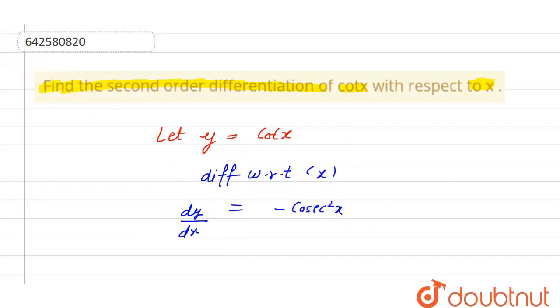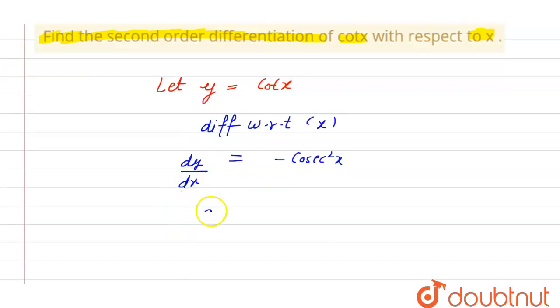we can differentiate it again with respect to x. So, differentiation again with respect to x. We have to use the formula of x^n to solve cosec²x. x^n says n shifts to coefficient and power decreases by 1. So, now we can apply this formula here.